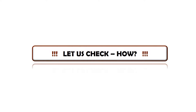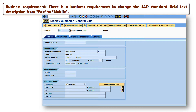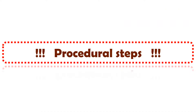The business requirement is to change the SAP standard field text description from 'fax' to the client-specific field description 'mobile' in the customer master data. In the next discussion we are going to elaborate the procedural steps you have to follow in order to change the SAP standard field text description with a client-specific field text description.